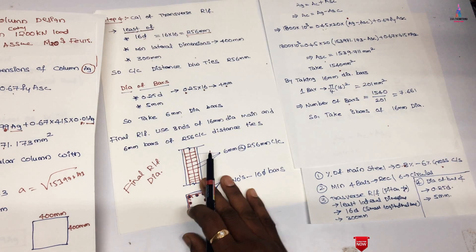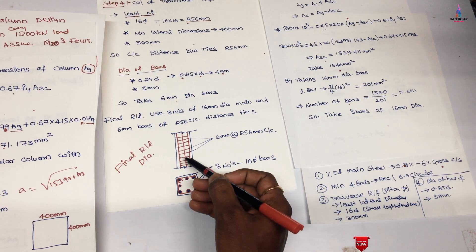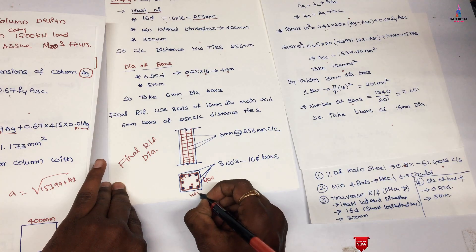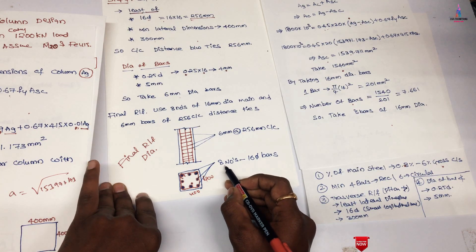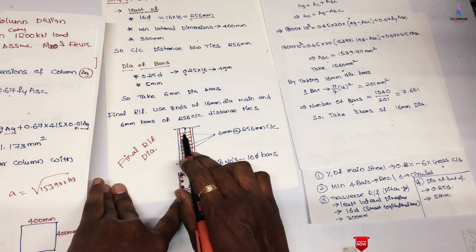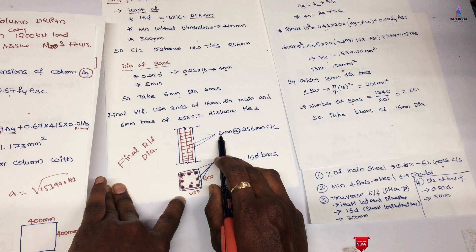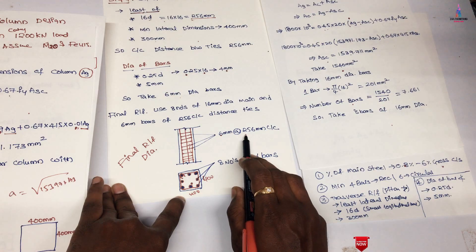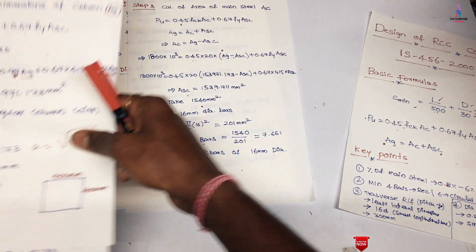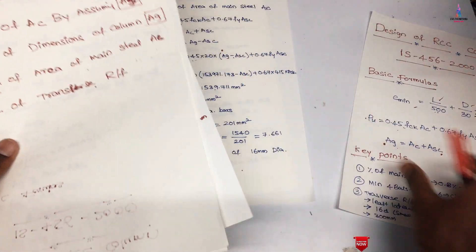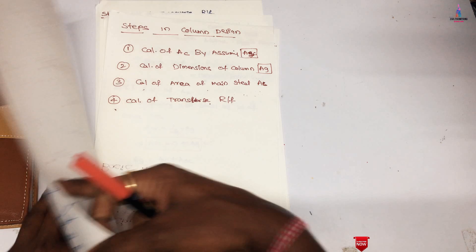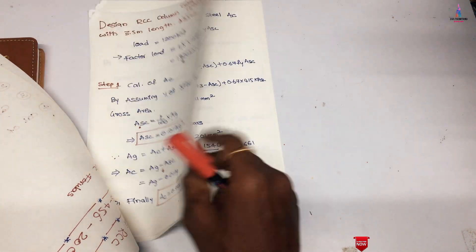The reinforcement diagram shows the front view and top view of the column section. The cross-section is 400 mm × 400 mm with 8 bars of 16 mm diameter for main reinforcement, and 6 mm diameter lateral ties at 256 mm center to center. This completes the column reinforcement design calculation as per IS 456:2000, using the three formulas (e_min, Pu, and Ag) and the four design steps.